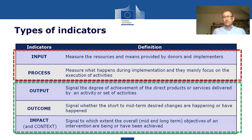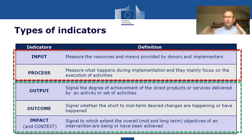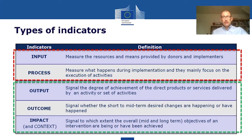Below the process indicators, there are three other types of indicators in a green box — the results indicators. When you want to know what results you're getting, you should be interested in your output indicators, outcome indicators, and impact indicators. If you're interested in implementation, then you look at process indicators.